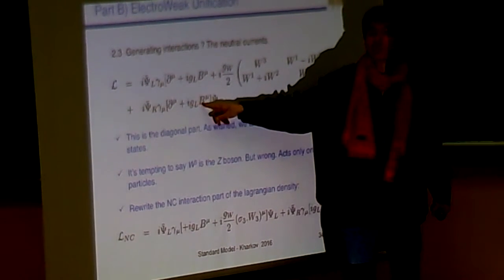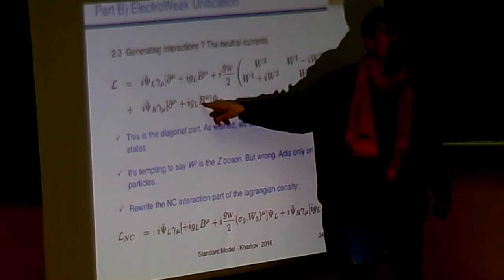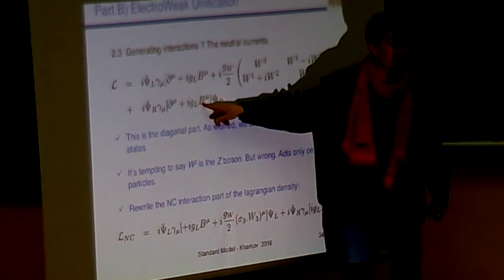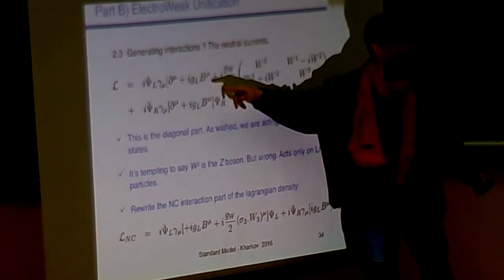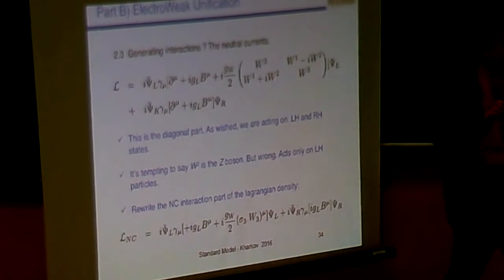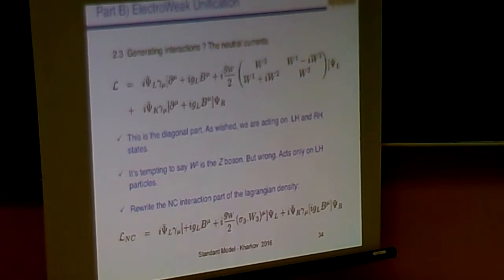So then, it could be extremely tempting that we say, this is the W3, that's the Z boson. Why not? It comes from SU2. It's weak interaction. It could be nice. And we say that B is what, according to you? The photon, that's what you say. We could say that. This is the photon, and I'm back with the QED, and this is the weak interaction. Neutral currents, and this is all.